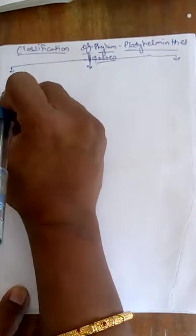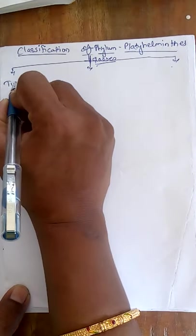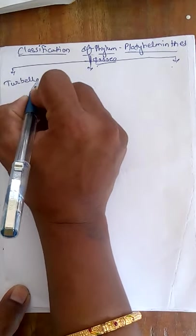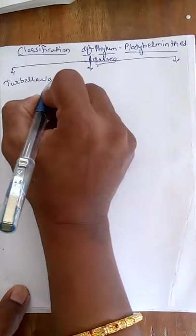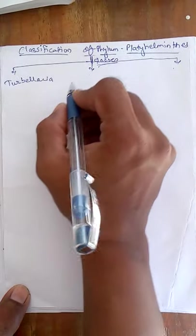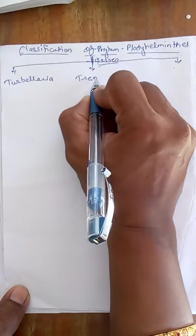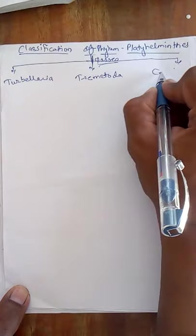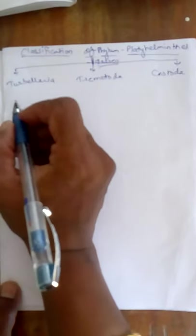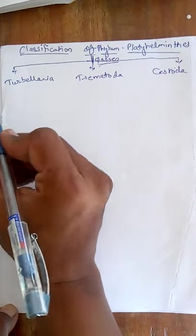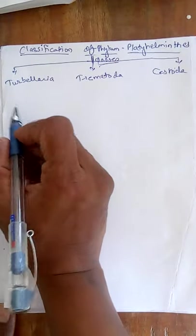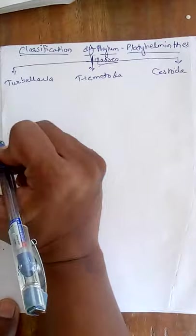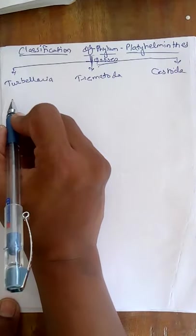The first class is known as Turbellaria, the second one is known as Trematoda, and the third one is known as Cestoda. We will comparatively study all three classes.